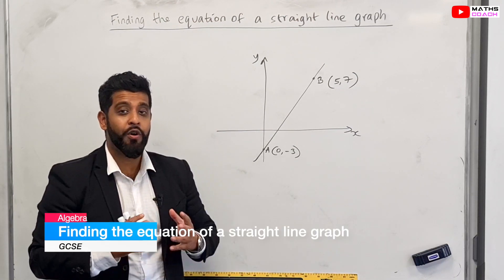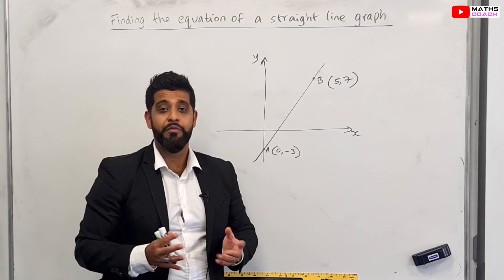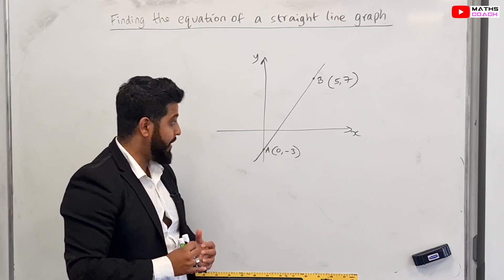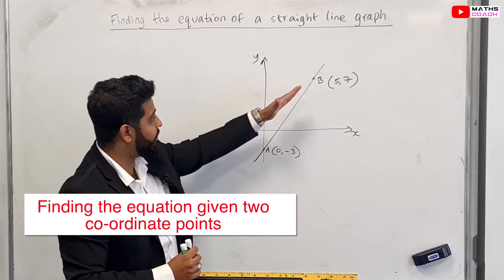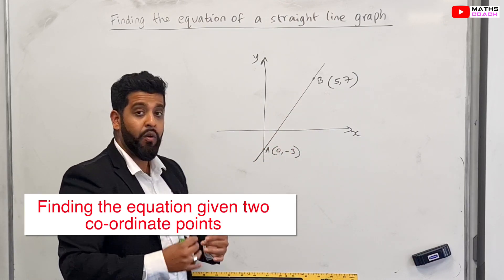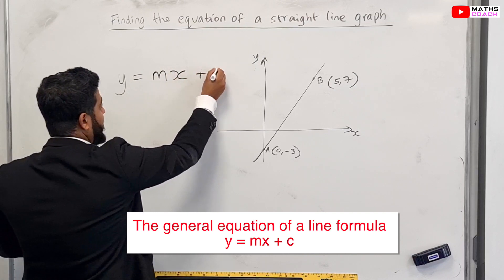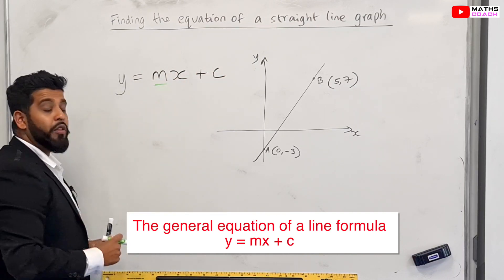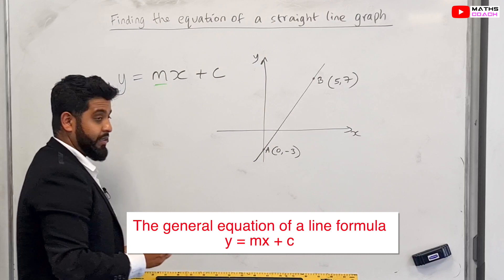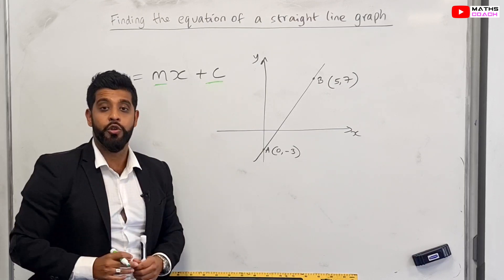Welcome to this lesson where we'll be finding the equation of a straight line. In an exam you might be given different types of questions, and depending on the type of question the method may need to be adjusted slightly. On the board we have a graph with a straight line, and we've been given the coordinates of A and B and we want to find the equation of this line. You need to know the formula y = mx + c, where m is the gradient and c is the y-intercept, which is where the line cuts the y-axis. There are different methods to finding this c value which I will show you in this lesson.